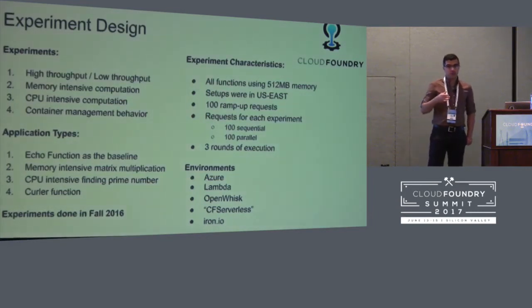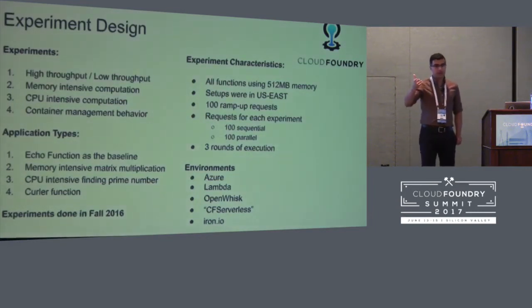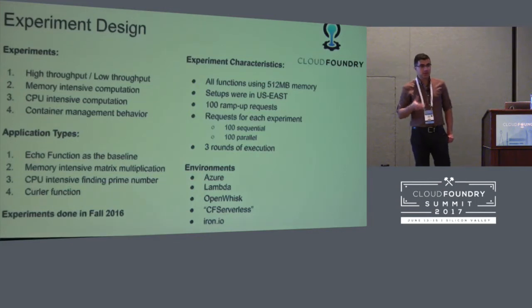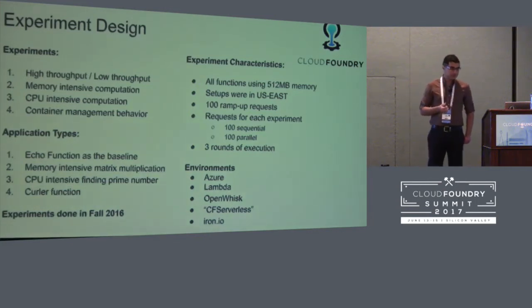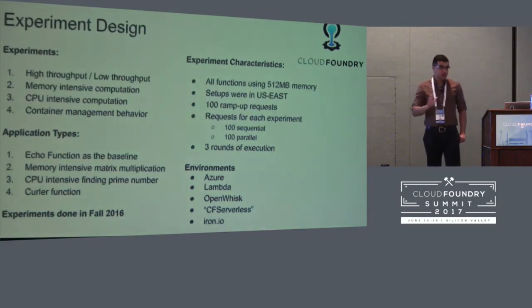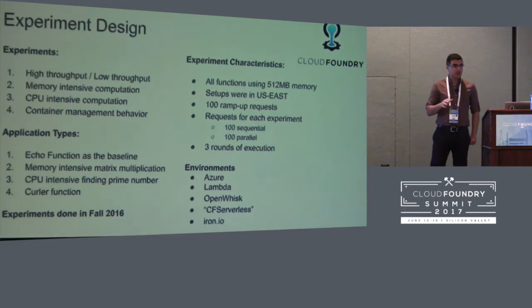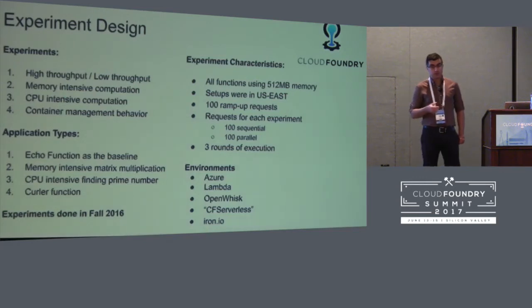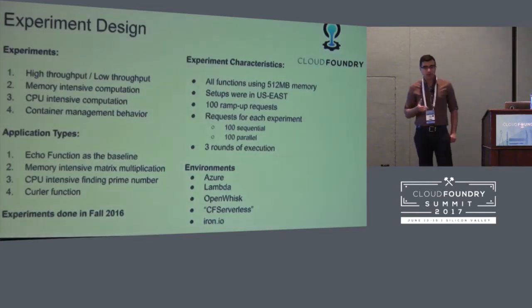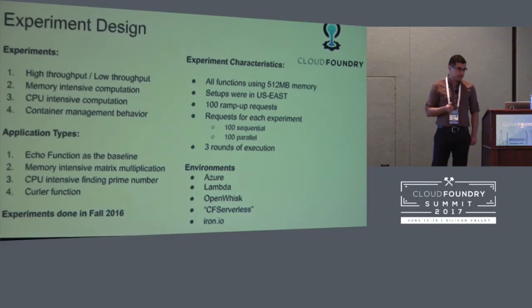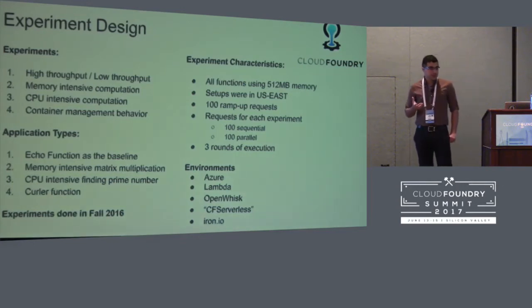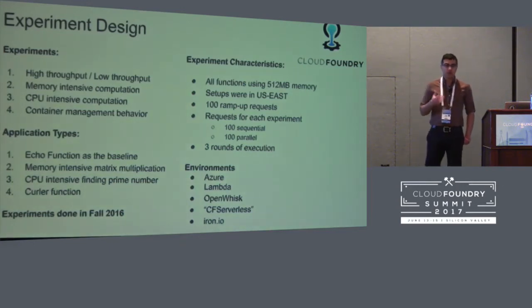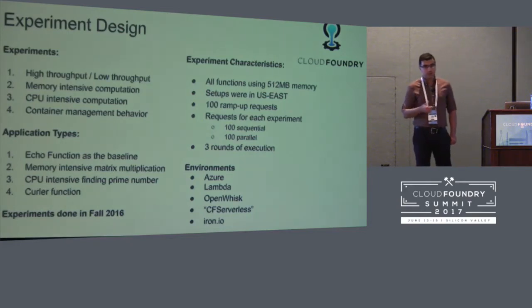We defined a set of functions to address these requirements. We defined an echo function — basically a hello world function — you launch it, it sends hello world back, and we measure the round-trip time. We had a memory-intensive matrix multiplication function that multiplies two 300x300 matrices and returns the results. For CPU-intensive functions, we had a function that finds prime numbers below 1,000. And we had a caroler function that would curl an endpoint from within a container to understand whether a container stays around or gets killed after a request.